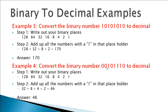And finally 00101110. We have a 0 in the 128s place, 0 in the 64s, a 1 in the 32s, 0 in the 16s, a 1 in the 8s — so now I have 32 plus 8 equals 40 — then a 1 in the 4s place gives me 44, and finally a 1 in the 2s place: 44 plus 2 is 46. Final answer: 46.